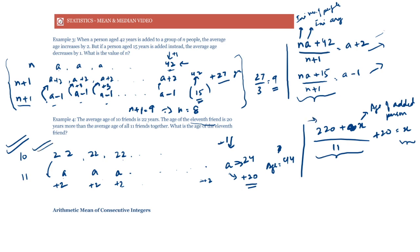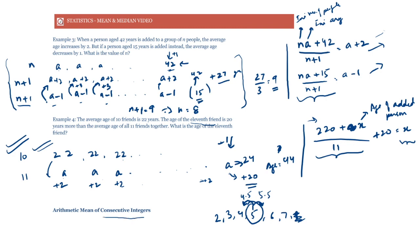Arithmetic mean of consecutive integers: this topic was covered in algebra when discussing arithmetic progressions. For example, with 3, 4, 5, 6, 7 the average is the middle number, 5. Adding an integer to the right increases the mean by 0.5, making it 5.5. Adding a number to the left, such as 2, decreases the mean by 0.5 to 4.5. This concept is discussed in detail in the algebra video.